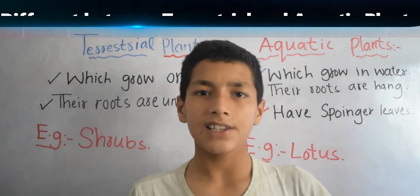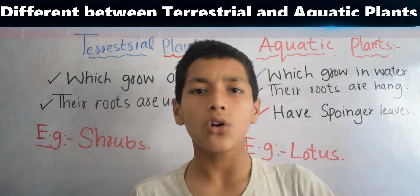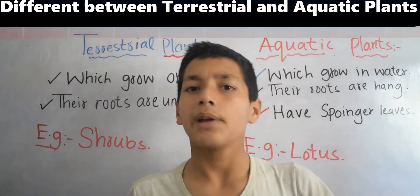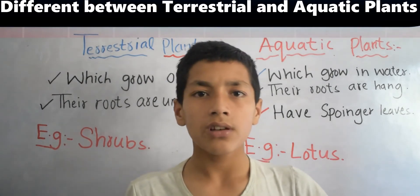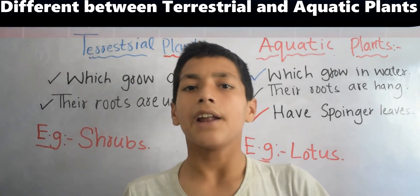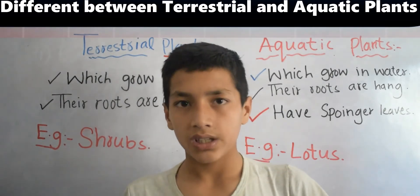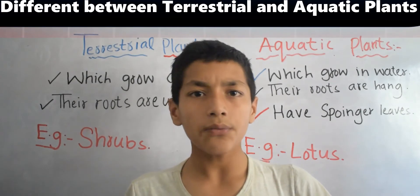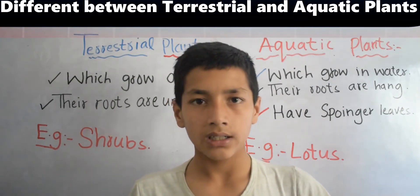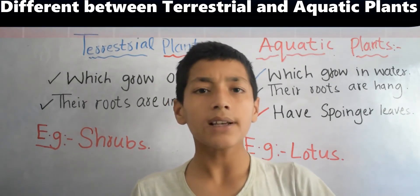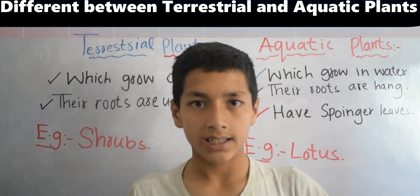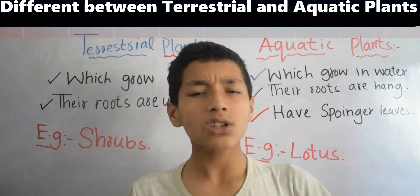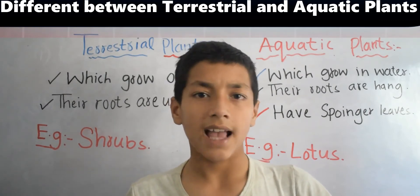Plants are living organisms that grow in the earth, having stems, leaves, and roots. Some plants prepare their own food in the process of photosynthesis. Plants also provide us oxygen.